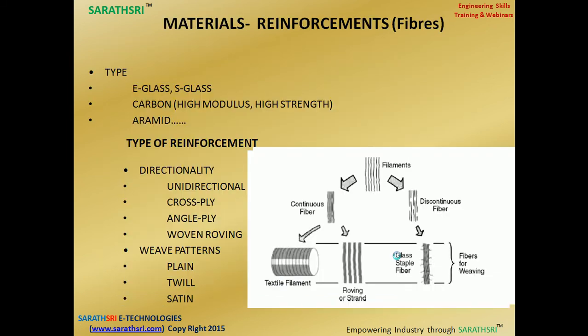The two main ingredients of composites are fiber and matrix. For fibers, there are different types such as carbon, aramid, kevlar, E-glass, and S-glass. Reinforcement arrangements include unidirectional, cross-ply, and various other orientations. We will now cover what kind of fibers exist, what types of reinforcement are used, and what advantages they offer.